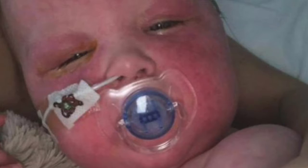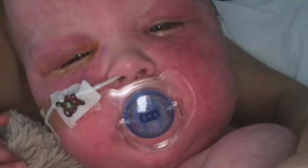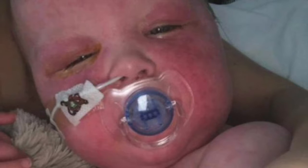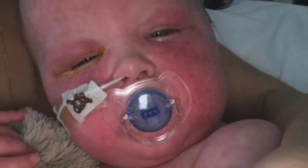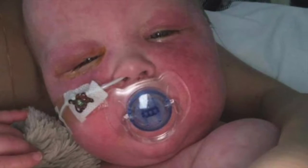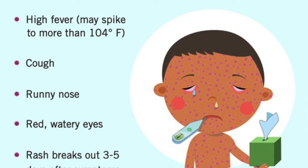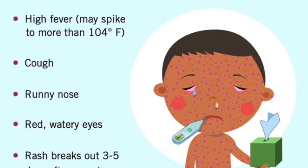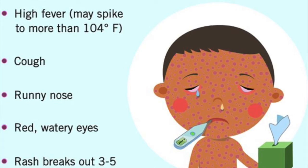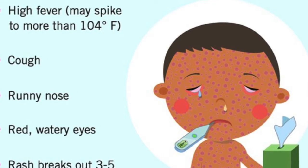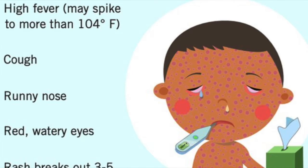The CDC website says, quote, "Measles isn't just a little rash. Measles can be dangerous, especially for babies and young children," end quote. Before the rash appears on the body, white spots called cochlear spots appear inside the mouth. Other symptoms include a very high fever of 104 degrees Fahrenheit or more, a cough, runny nose, and watery eyes.